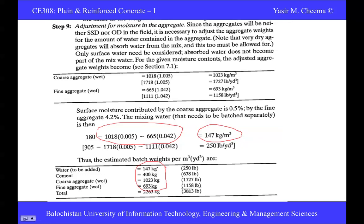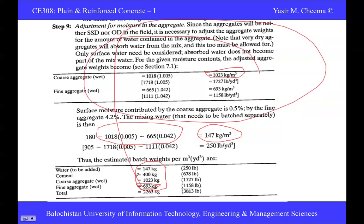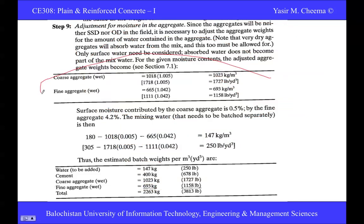The final mix design results per cubic meter of concrete: water = 147 kg, cement = 400 kg, wet coarse aggregate = 1023 kg, fine aggregate = 693 kg. Note: if you're asked to design for saturated surface dry conditions, you don't need to do the moisture adjustment step.